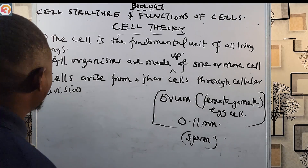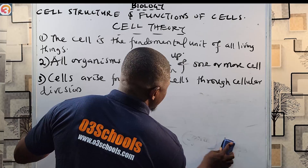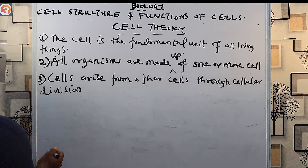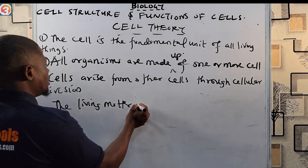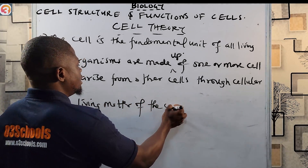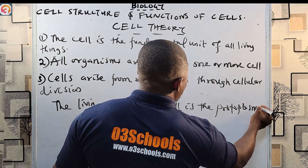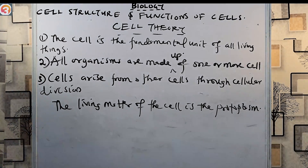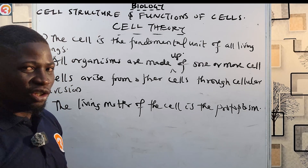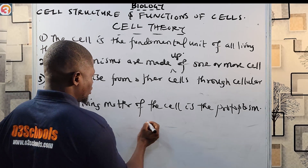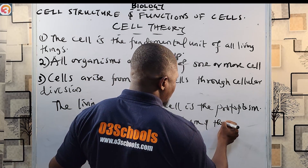The living matter of the cell is called the protoplasm. The protoplasm consists of the cytoplasm and the nucleus.